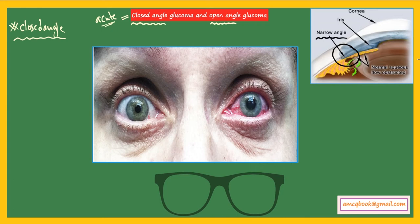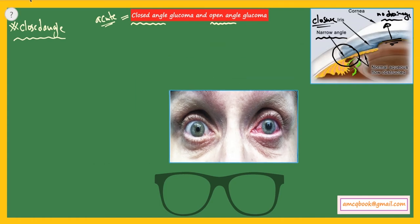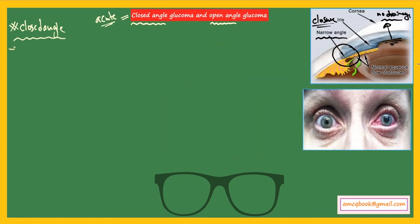If you look at the picture on the top right corner, you'll see that the angle is narrow and closed. For that reason, there is no drainage of the aqueous humor from the anterior chamber of the eye, which leads to increased pressure.